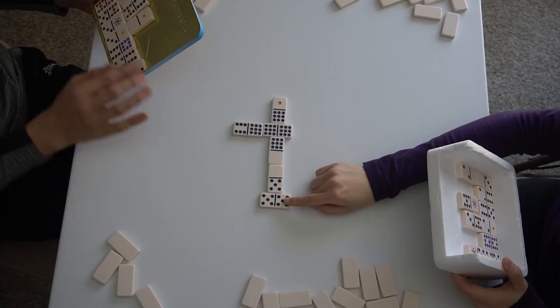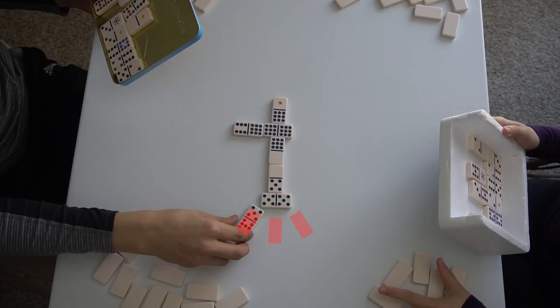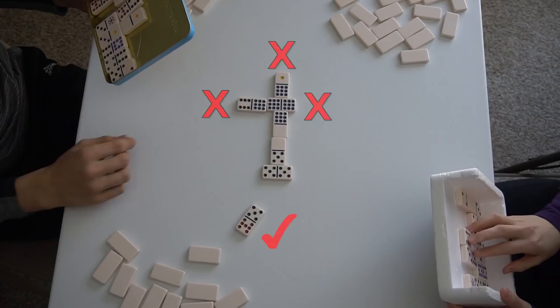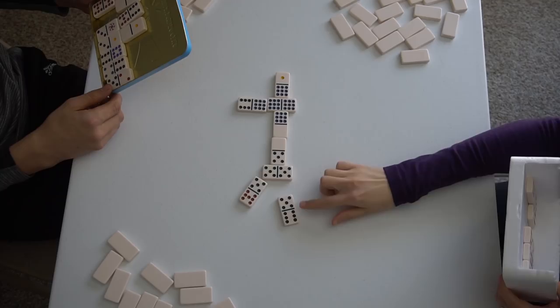And here is the most interesting part. Whenever a player puts down a double, the next three dominoes played have to match that double or, as we like to call it, build a tree. Until that tree is built, players cannot place their dominoes anywhere else.